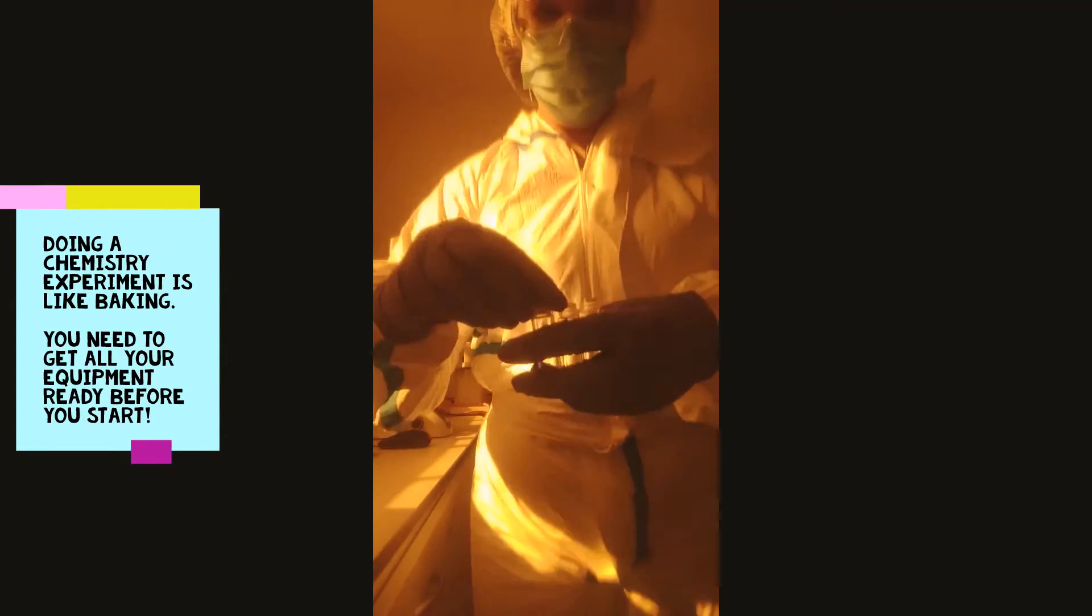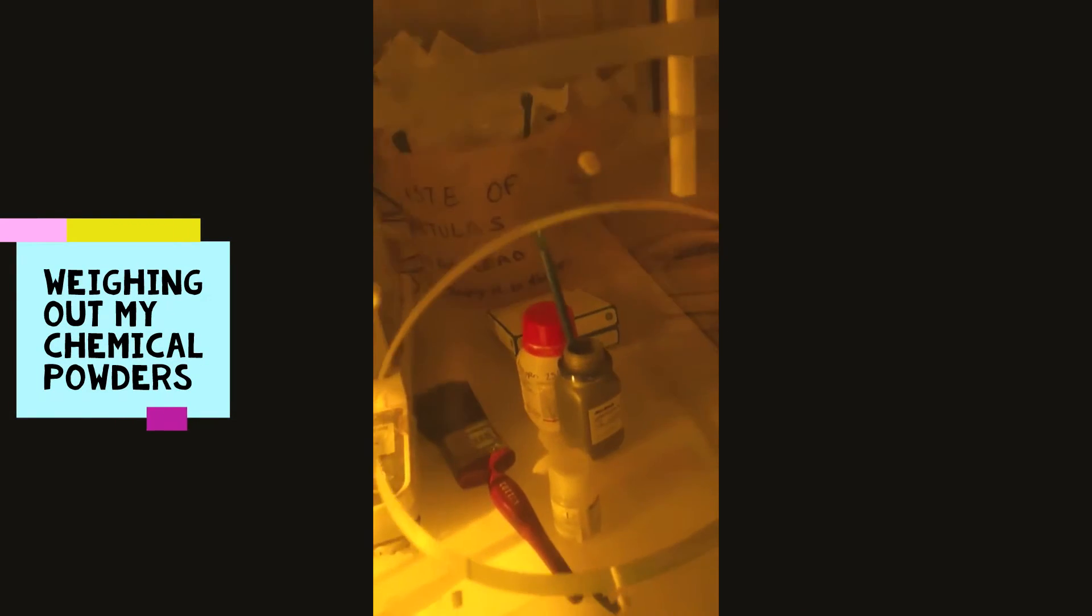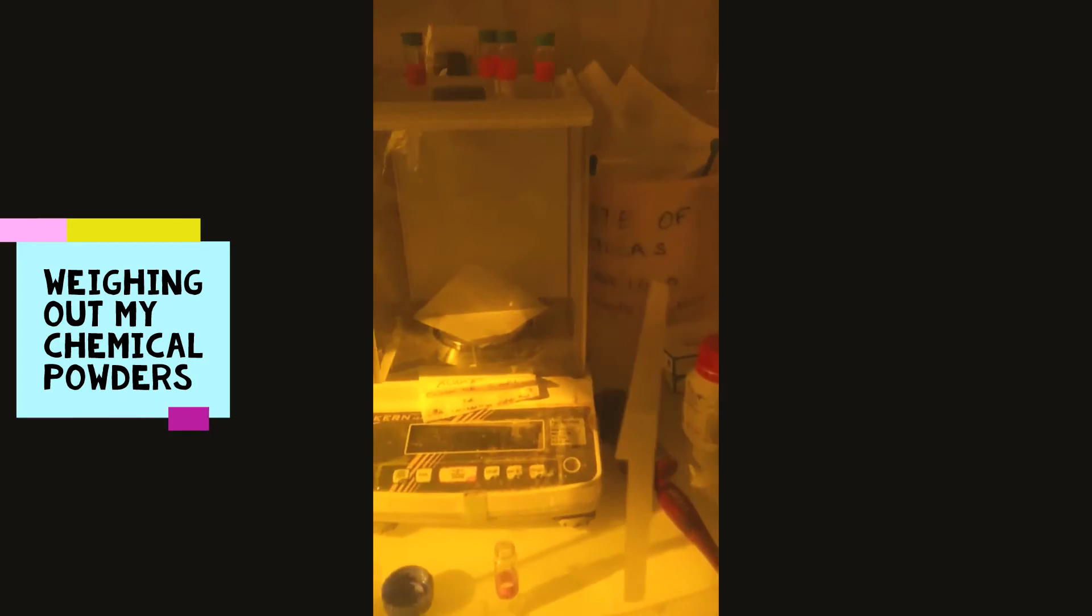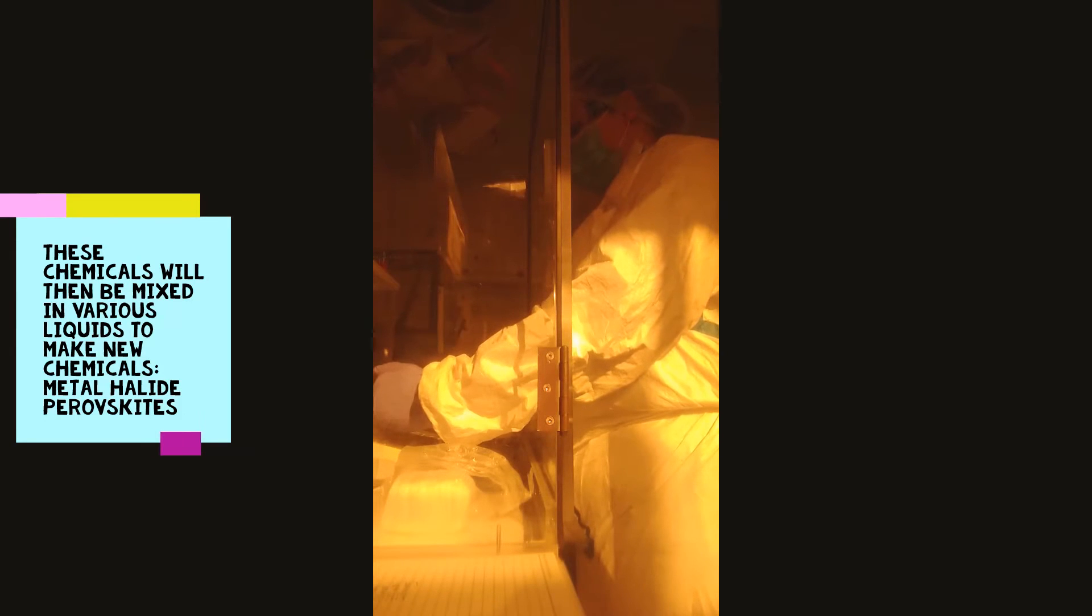So what you're going to see is me measuring out my chemicals soon. The way we make our chemicals is we start generally with these powders, and you can just buy chemicals off the internet—there are various companies that kind of like Amazon for chemicals. We buy what we need, and then before I come into the lab I work out exactly how much I need of each powder. Then I write that in my lab book, I bring my lab book with me, and I weigh it out into these little vials.